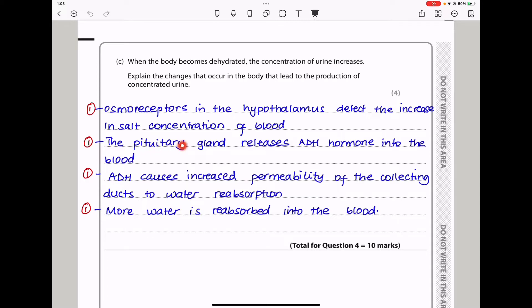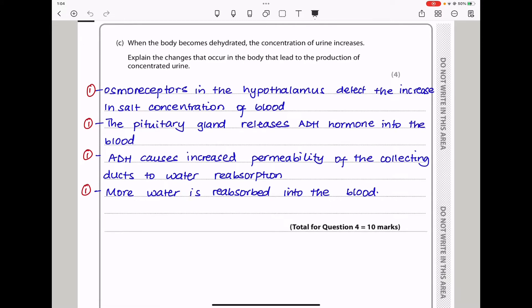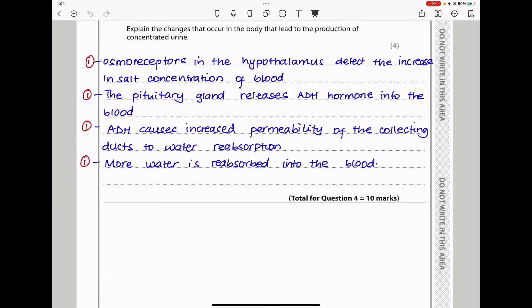Then, the pituitary gland will release anti-diuretic hormone into the blood. This hormone will cause increased permeability of the collecting ducts to water reabsorption. And so, more water will be reabsorbed into the blood, and that will lead to production of more concentrated urine. This brings us to the end of question four.